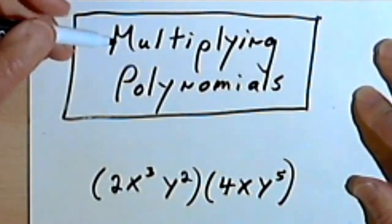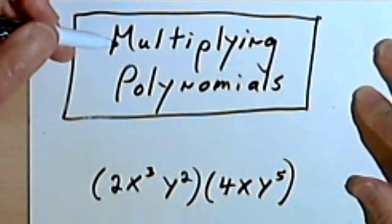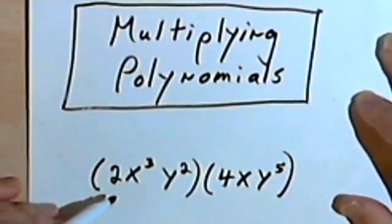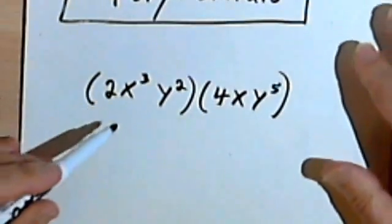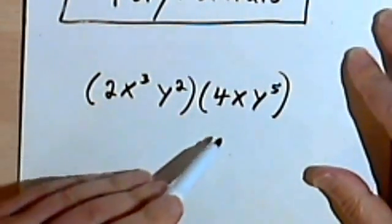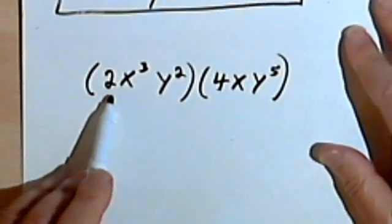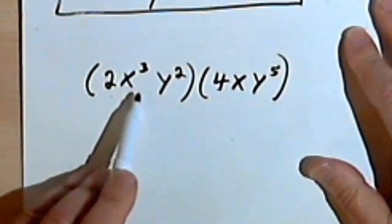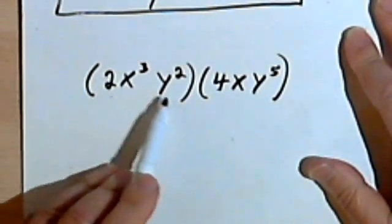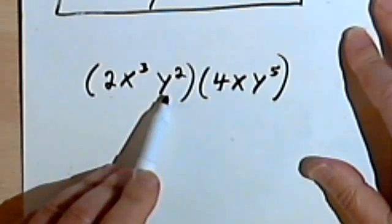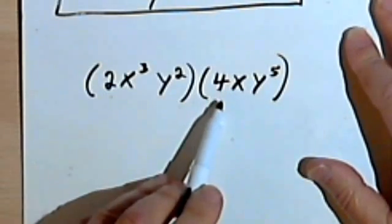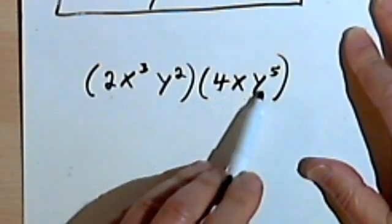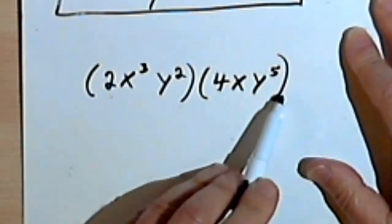This video is going to be about multiplying polynomials. Let's start out with a monomial times a monomial. Here we have the monomial 2x to the third y squared, and we're multiplying that by 4xy to the fifth.